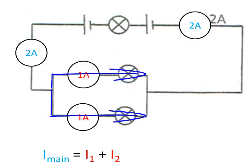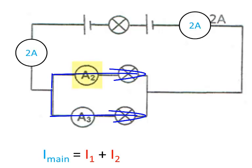Half of it goes through the first branch, and half of it goes through the second branch. A2 measures how much of the current goes through the first branch. A3 measures how much of the current goes through the second branch.